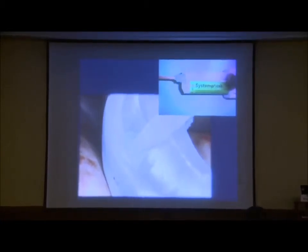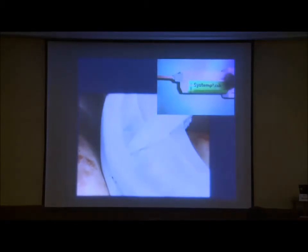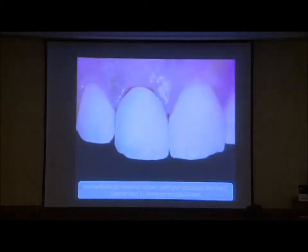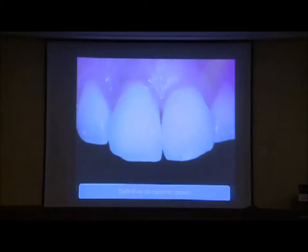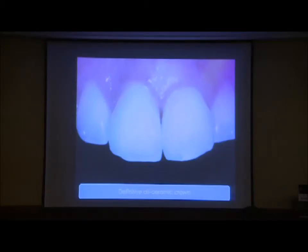You can utilize different materials for the provisional. The most important step when inserting is to finish and then highly polish it, especially in the gingival area. For cementation, you can use temp-bond or carboxylate cement for a stronger hold, especially if you intend to leave it for a longer period. The patient will leave with a fixed crown on the same day, and you benefit from shaping the emergence profile from the soft tissue.